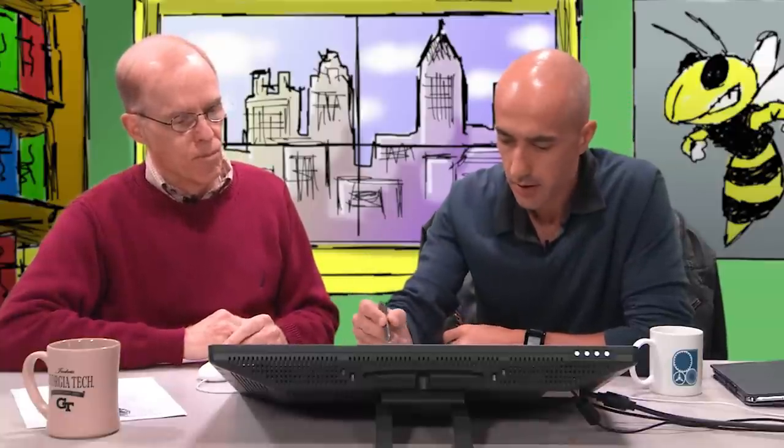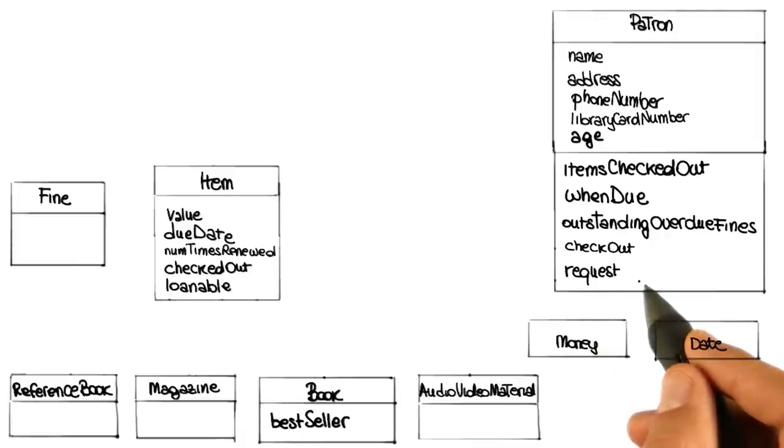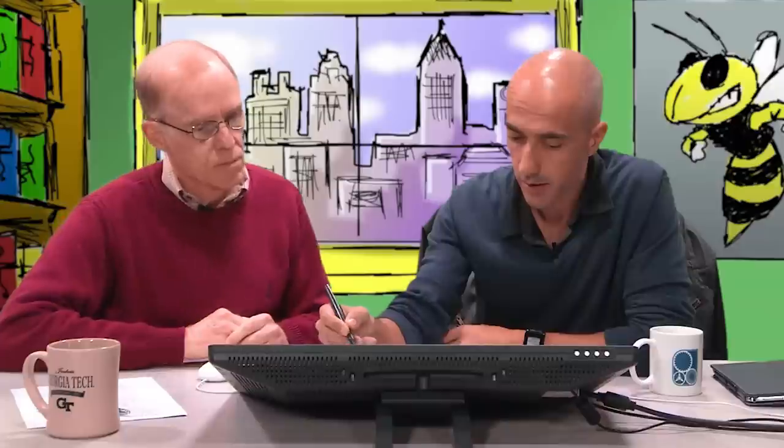Then I'm going to do the same thing here. I'm going to add this method, which I'm going to call request, and I'm going to put it here in the list of methods, in the list of operations for the patron.